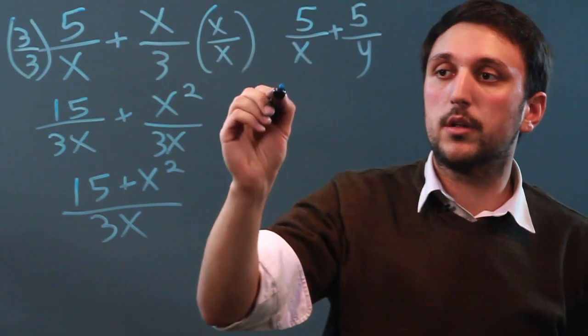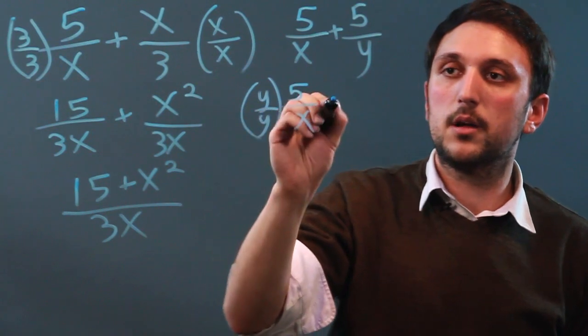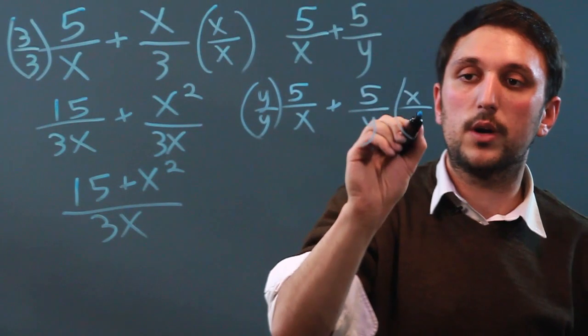So over here we're going to say 5 over x times y over y, plus over here 5 over y times x over x.